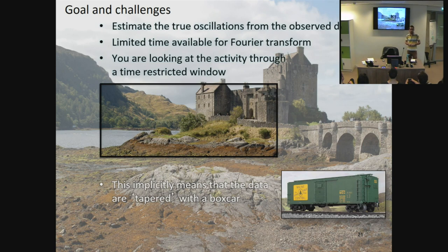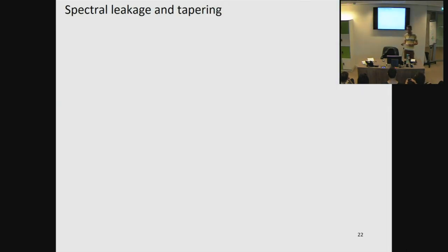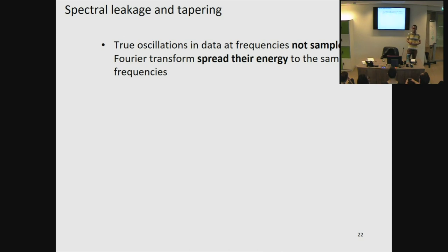We also have discrete sampling — we can only sample discrete segments in our data. Because of finite sampling we only have a limited box, and because of discrete sampling we can only look at a pixelated version of the signal. This means that the true oscillations in the data cannot always be sampled, and this leads to spectral leakage. We can control spectral leakage with tapering.